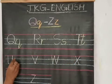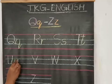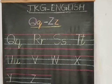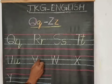U for Umbrella, this is V for Van. Small v you will write from the second line.